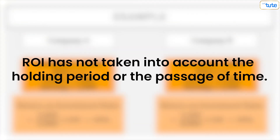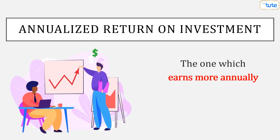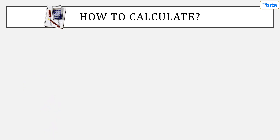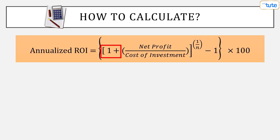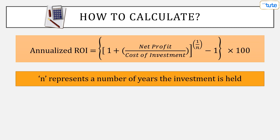So to avoid this limitation, annualized ROI can be taken into account. The one which earns more annually will be more profitable than the other. The annualized return can be calculated as: 1 plus profit or returns divided by cost of investment, whole raised to 1 by N, whole minus 1, multiplied by 100. Here, N represents the number of years the investment is held.